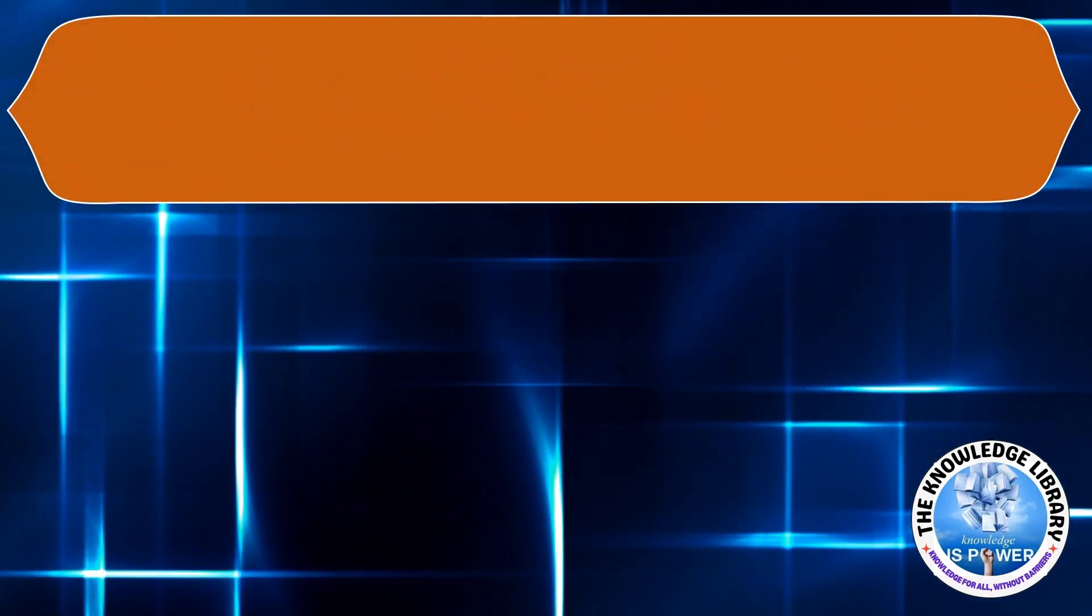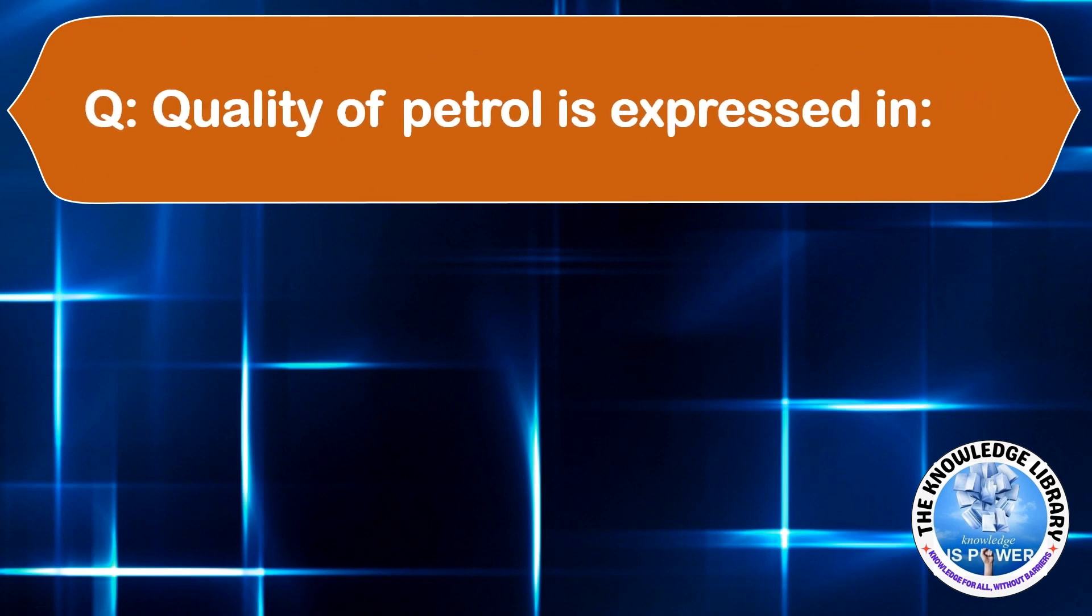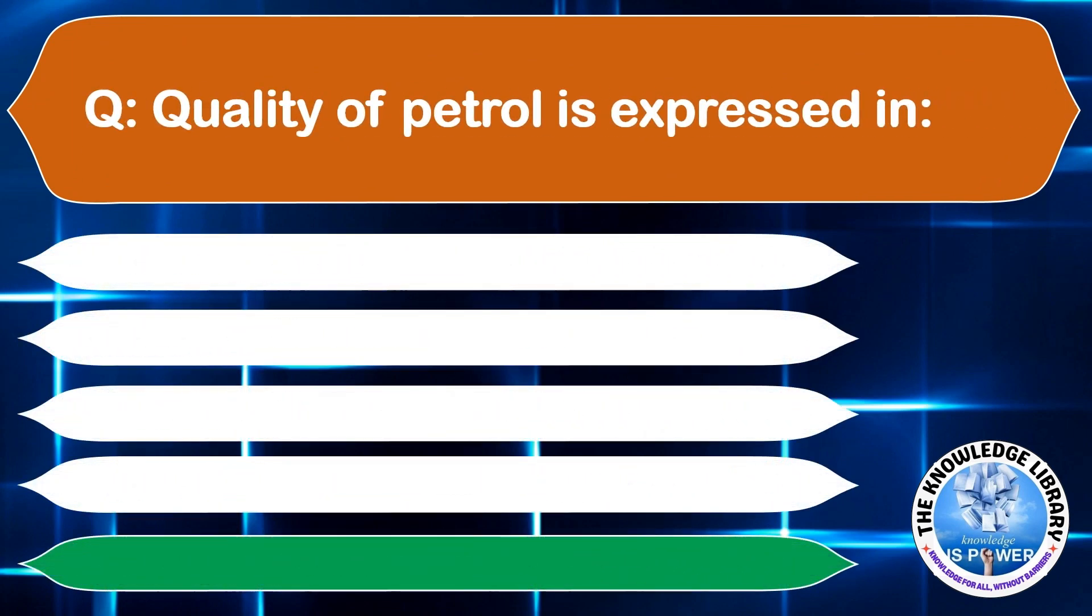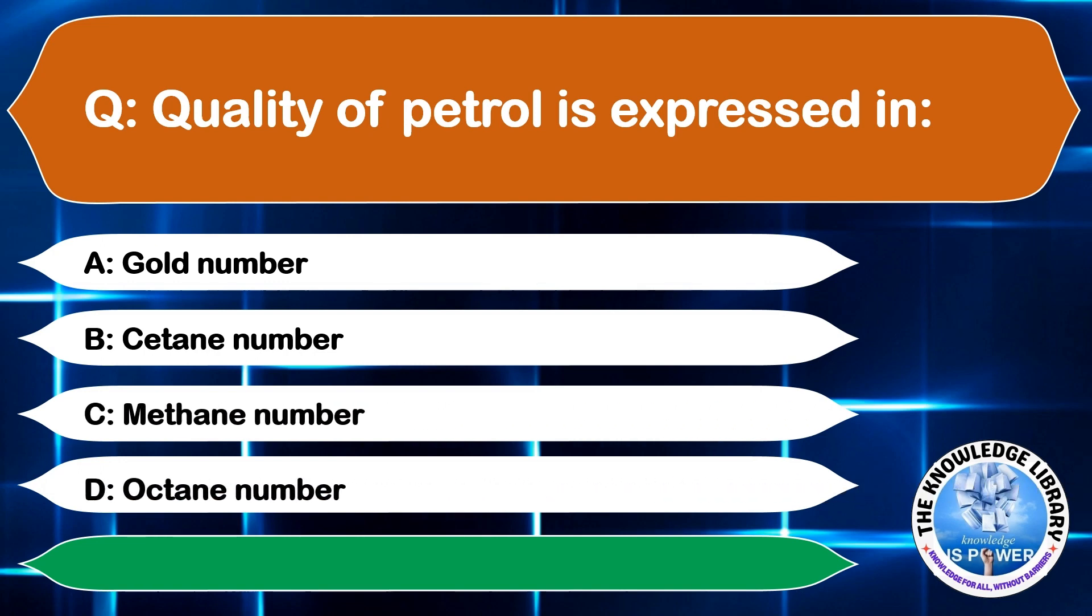Quality of petrol is expressed in: A: Gold number, B: Cetane number, C: Methane number, or D: Octane number. The correct answer is option D, Octane number.